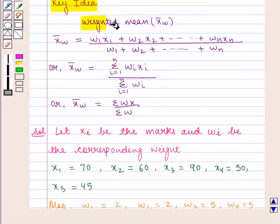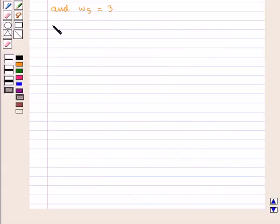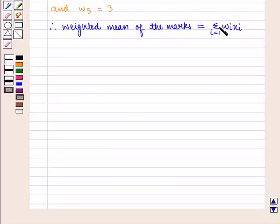We know that weighted mean denoted by x̄w is given by summation wixi where i is running from 1 to n upon summation wi where i is running from 1 to n. Therefore, weighted mean of the marks is given by summation wixi where i goes from 1 to 5 upon summation wi where i goes from 1 to 5.